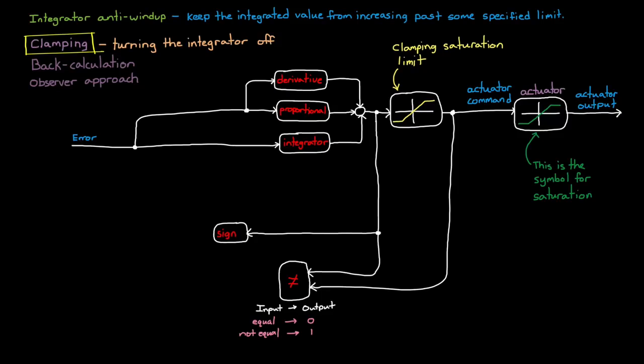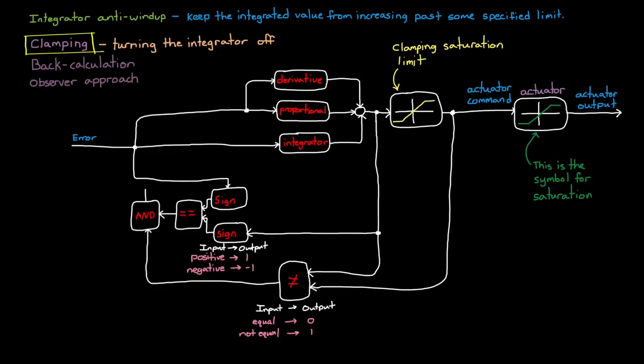The second check is to compare the sign of the controller output with the sign of the error. If both the error and the controller output are positive, then we know that the integrator is still adding to the output to make it more positive. And if they're both negative, then we know that the integrator is trying to make it more negative. So we're looking to see if the output is currently saturating and the integrator is attempting to make things worse. From this, we can tell whether to clamp or not to clamp.